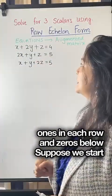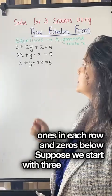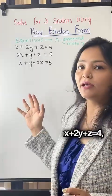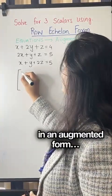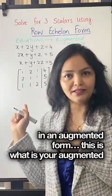Suppose we start with three equations: x plus 2y plus z equals 4, 2x plus y plus z equals 5, x plus y plus 2z equals 5. If I write it down in an augmented form, this is your augmented matrix.